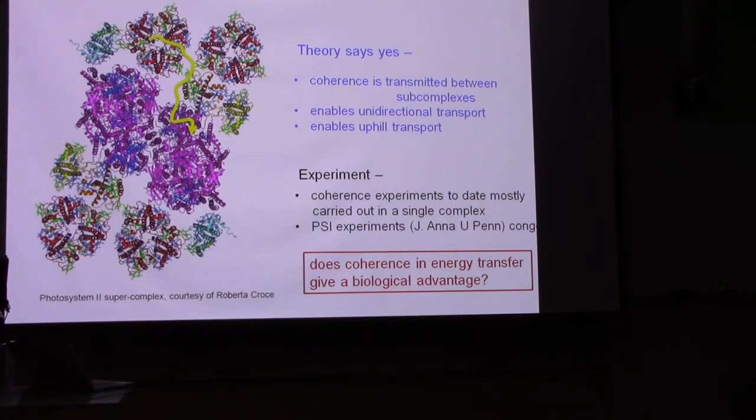the coherence can be transmitted between the sub-complexes, and more specifically, the coherence is actually what allows the energy to go in this direction, rather than that direction, or that direction, or this direction, or in and out again. So the coherence gives you the directional nature of transport. It also enables uphill transport. There are many cases where, although in general there's an energy funnel, in many instances the energy has to go uphill for reasons other than efficiency of energy transport. And coherence enables you to go uphill much more effectively.